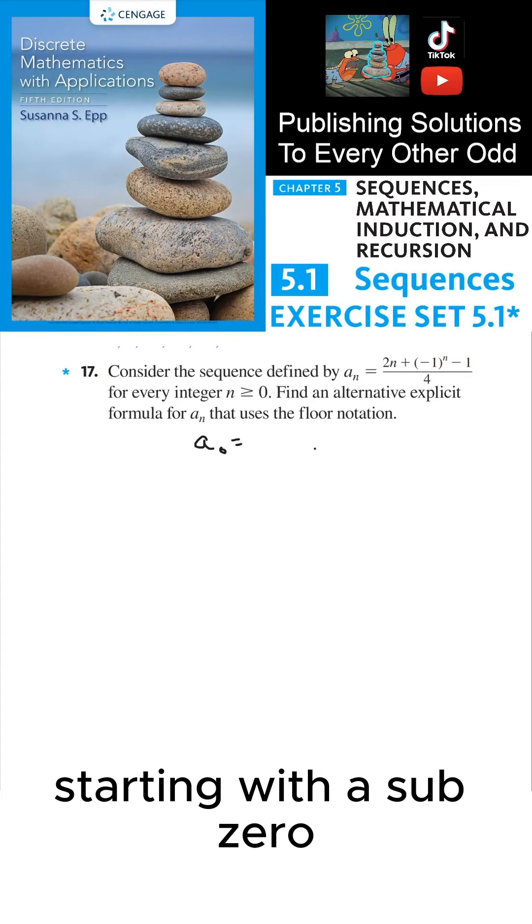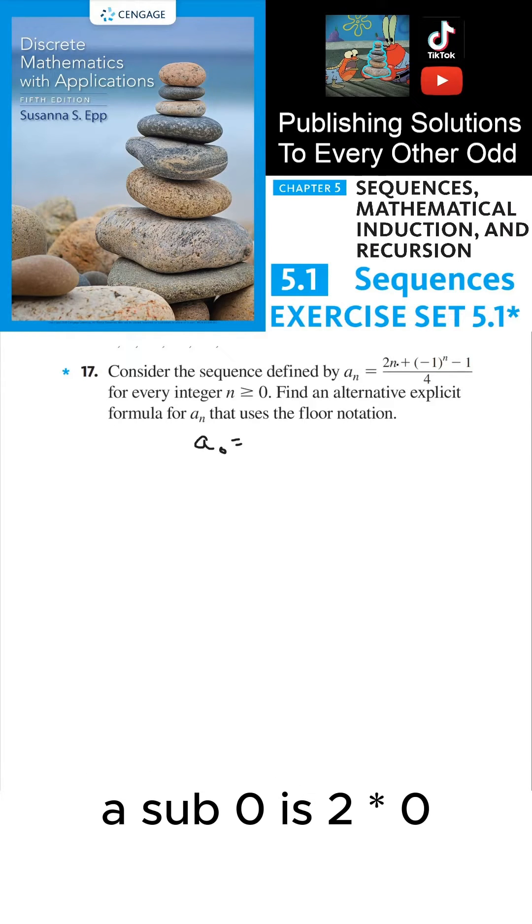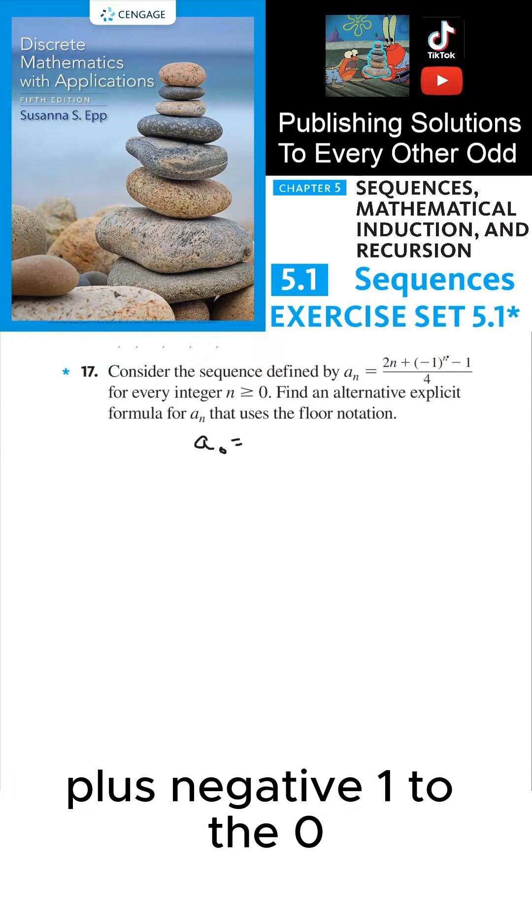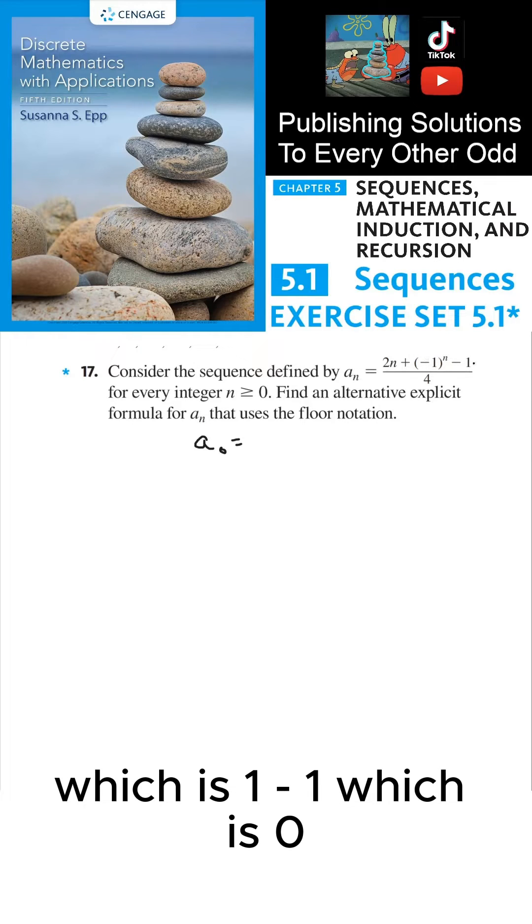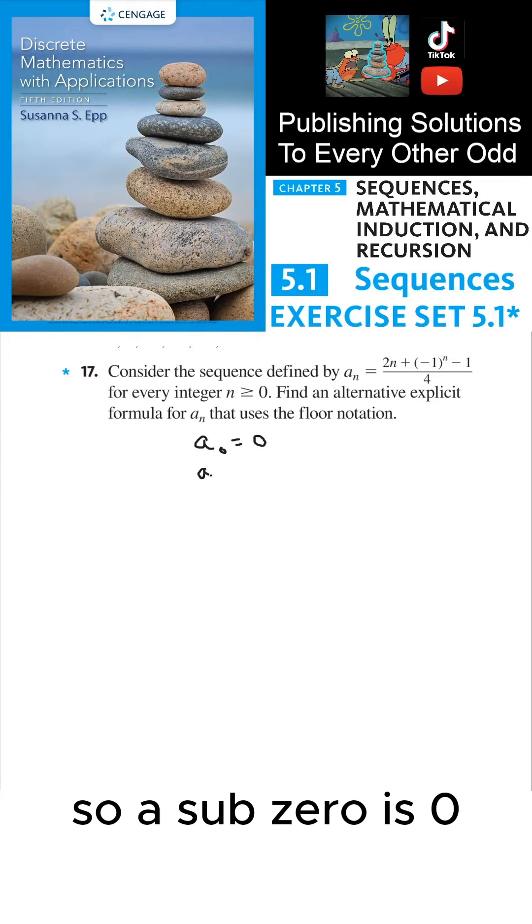Starting with a_0: a_0 is 2 times 0, which is 0, plus (-1)^0, which is 1, minus 1, which is 0, all divided by 4, which equals 0. So a_0 = 0.